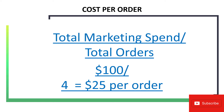In this example, you spend $100 in the month or for the year and you get four total orders — that means your cost per order was $25. And that basically is how you calculate cost per order.